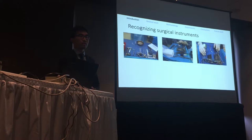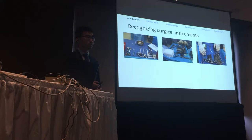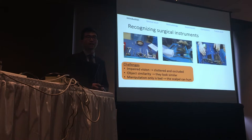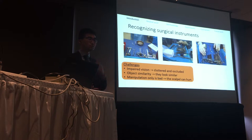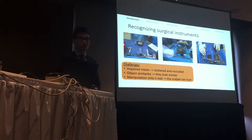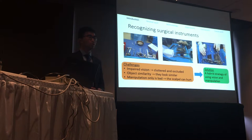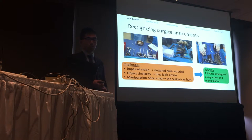Now let's look at the problem we're trying to solve: recognizing surgical instruments. There is a lot of similarity between this and finding a needle in a haystack. You have impaired vision because instruments are often cluttered, occluded, and displaying specular light. You have great object similarity — all these instruments almost look identical, even though there are about 20 different types. And you can't just rely on a bare hand. We propose an algorithm using a hybrid vision and manipulation approach to solve this problem.